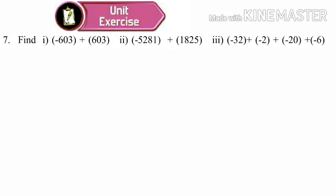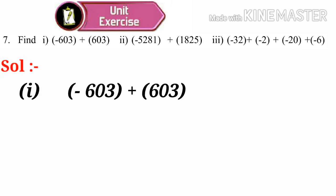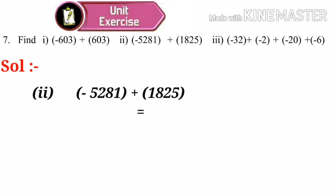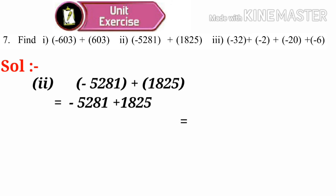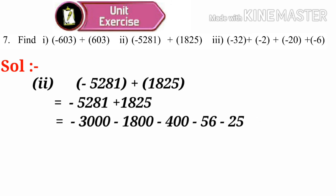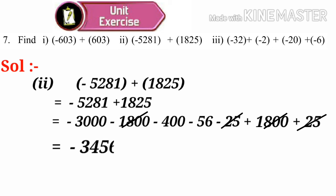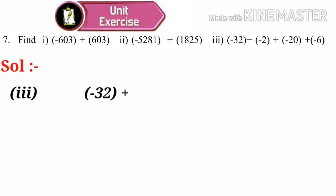Seventh problem. Solution number 1: minus 603 plus 603 — by subtraction, 603 minus 603 we get 0. Number 2: minus 5281 plus 1825 — minus 5281 can be written as the sum of negative integers: minus 3000, minus 1800, minus 400, minus 56, minus 25. Here plus 1800 and minus 1800 cancel, plus 25 and minus 25 cancel. The sum of the remaining negative integers — minus 3000, minus 400, minus 56 — is minus 3456.